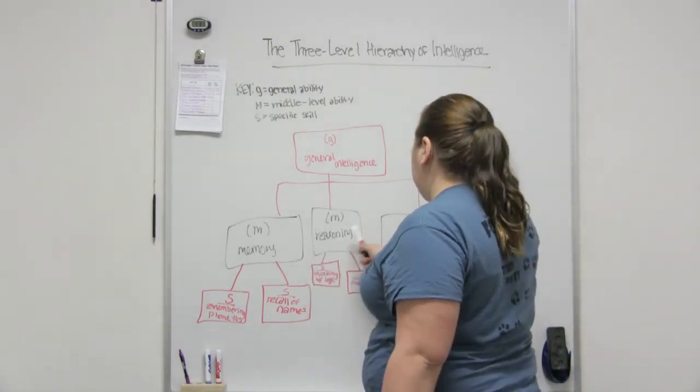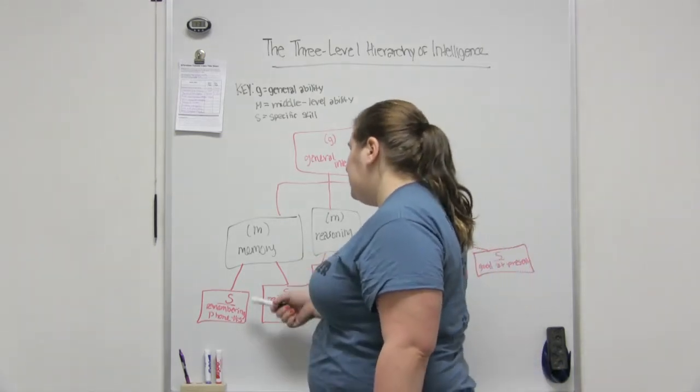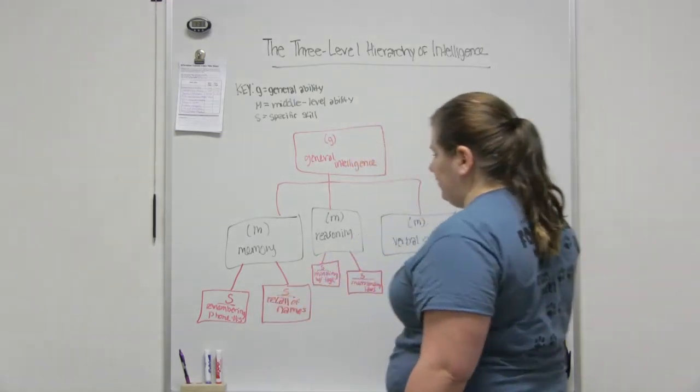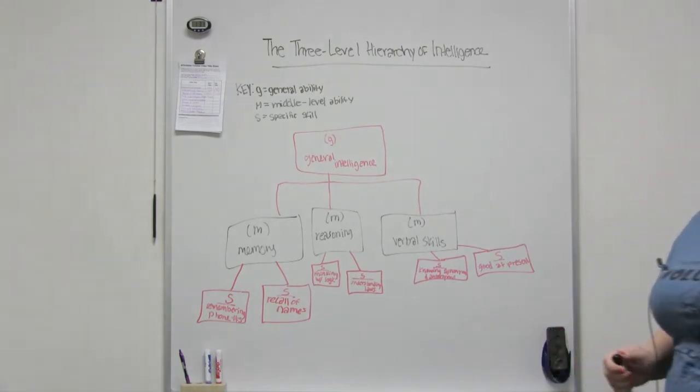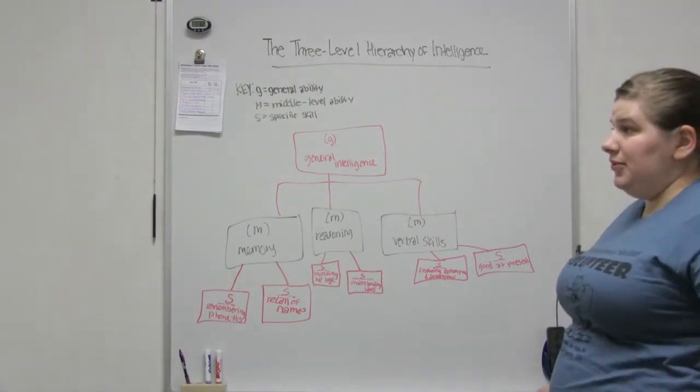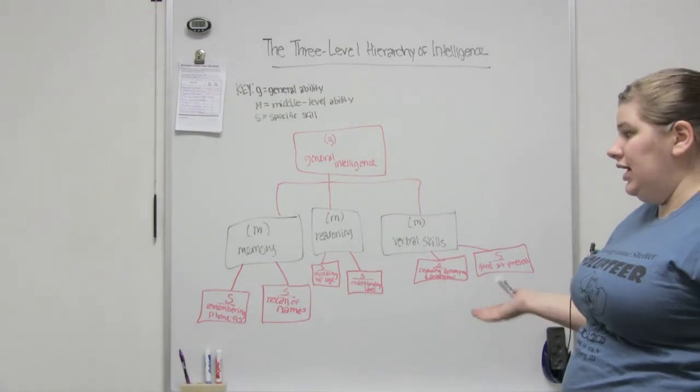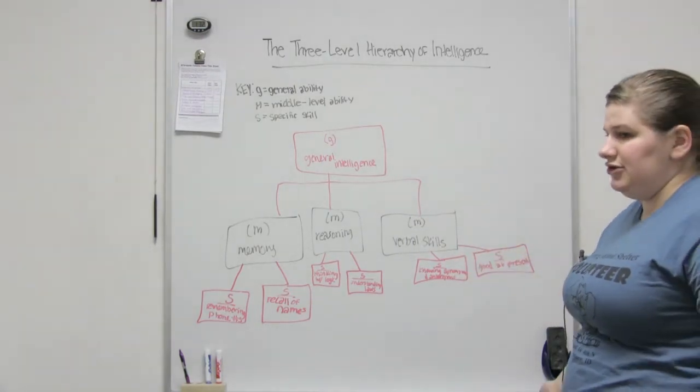Now memory can break down into specific skills like remembering somebody's phone number. Most of the time now we type it in, we never think about it again, we just hit a button. But some people have a specific memory skill as part of their general intelligence, and that is remembering those digits.